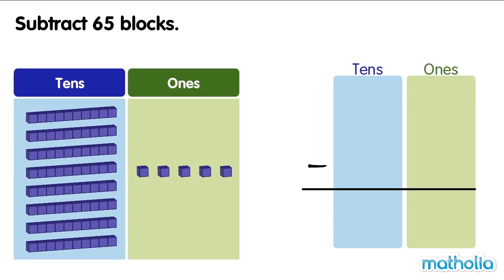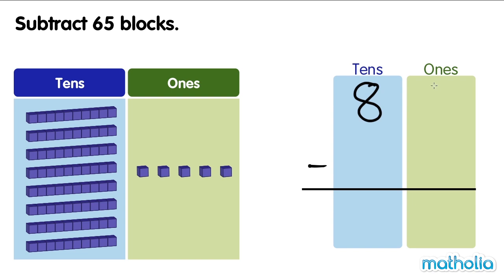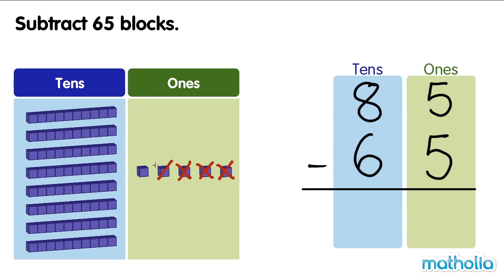Subtract 65 blocks. There are 85 blocks. We subtract 65 blocks. Let's start by subtracting the ones. 5 ones minus 5 ones equals 0 ones.